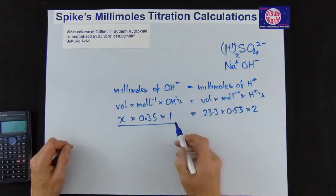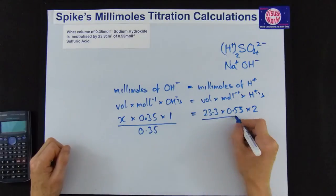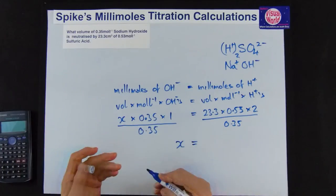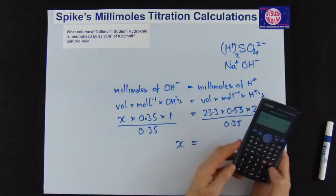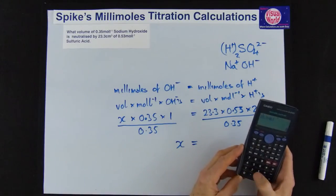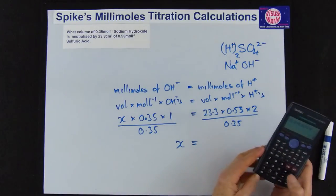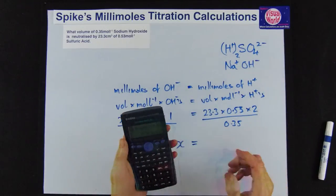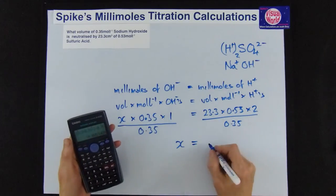So now all we need to do is find the X. We don't need to divide by 1 because that's not going to change so we just divide by the 0.35, divide by the 0.35 and that'll cancel out to just leave you with X. So all we need to do again is pick the calculator up and we've got 23.3 times 0.53 times 2 divided by... There's only one thing in the bottom so you don't need any brackets, 0.35 equals and we get 70.56.